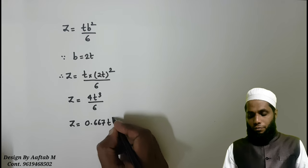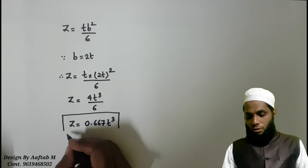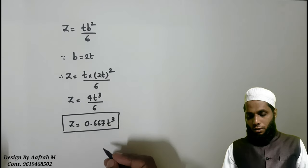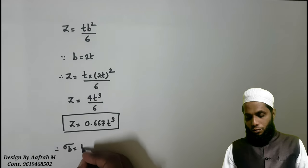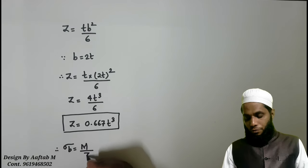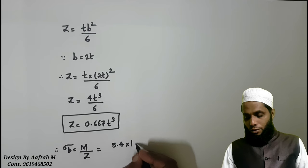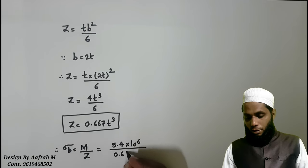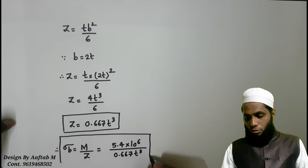Finally, we will find out what is bending stress by substituting M and Z. M value we have, we have moment value we already found, 5.4 into 10 raised to 6 upon 0.667 T cube. And we will term this as equation number 2.